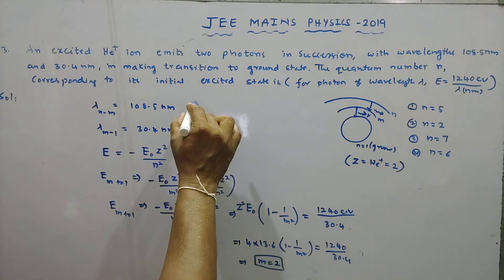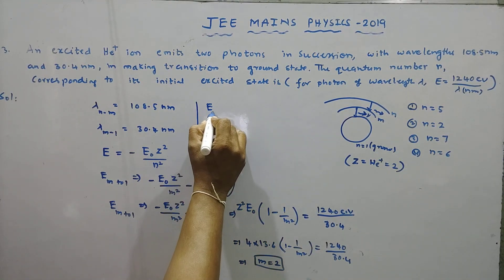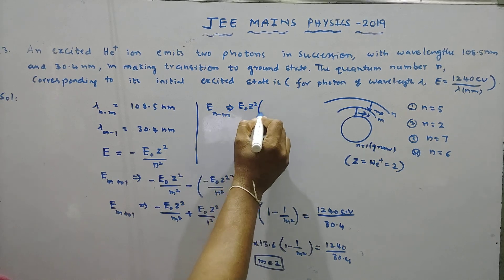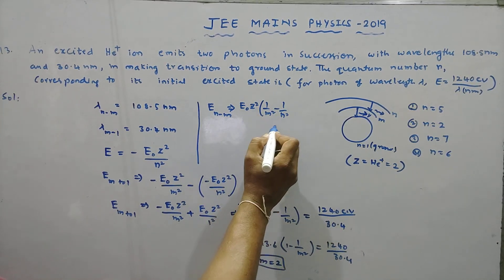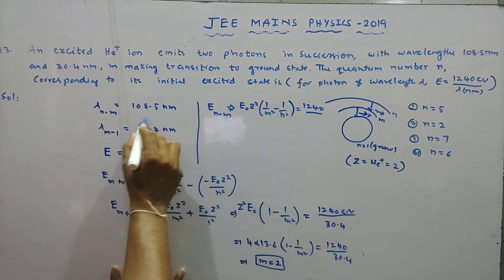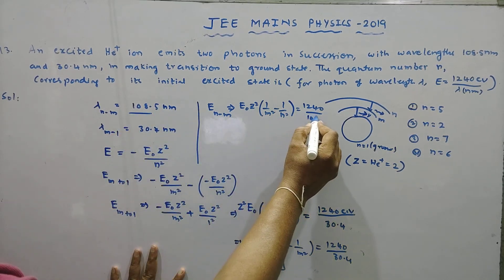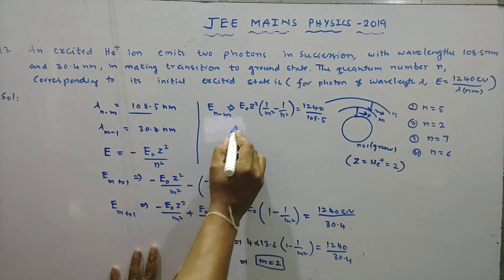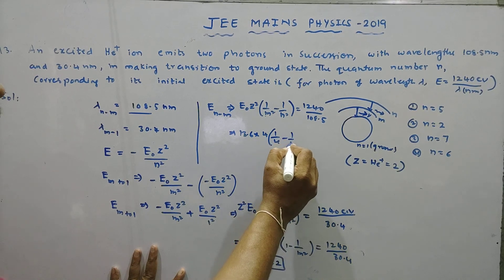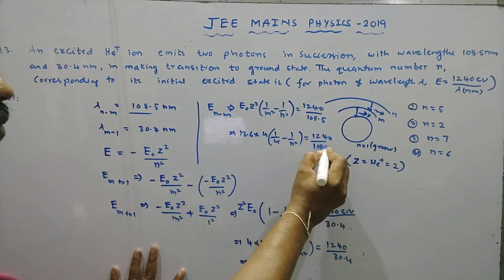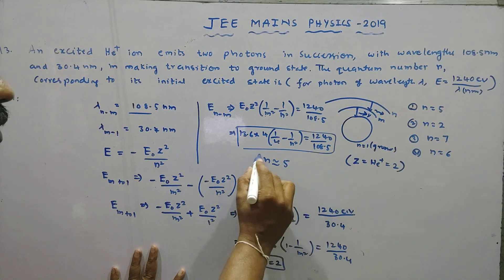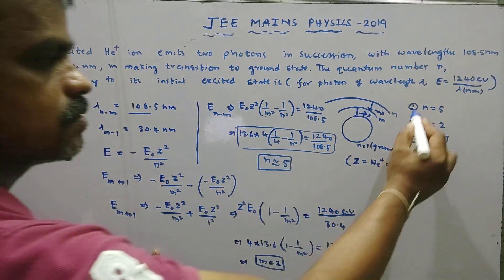Now we calculate the energy from N to M. That equals E-naught Z-squared times (1/m² minus 1/n²) equals 1240 divided by 108.5 nanometer. So 13.6 times 4 times (1/4 minus 1/n²) equals 1240 divided by 108.5. Solving this calculation, n comes out to nearly equal to 5. So the right option is 5.